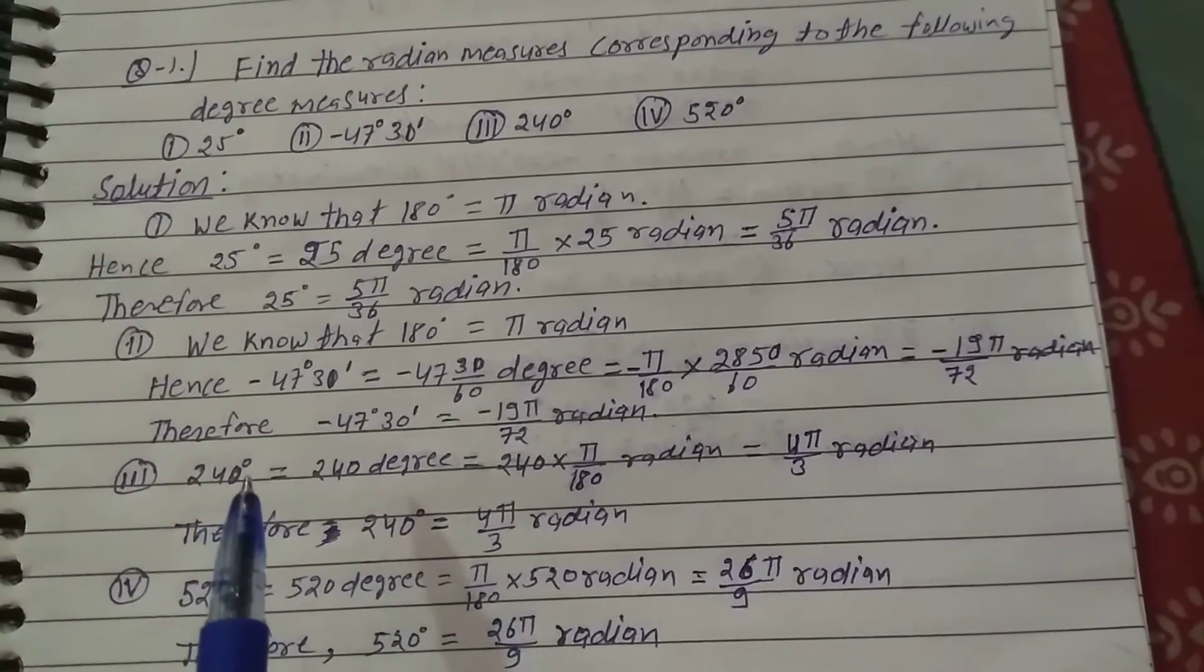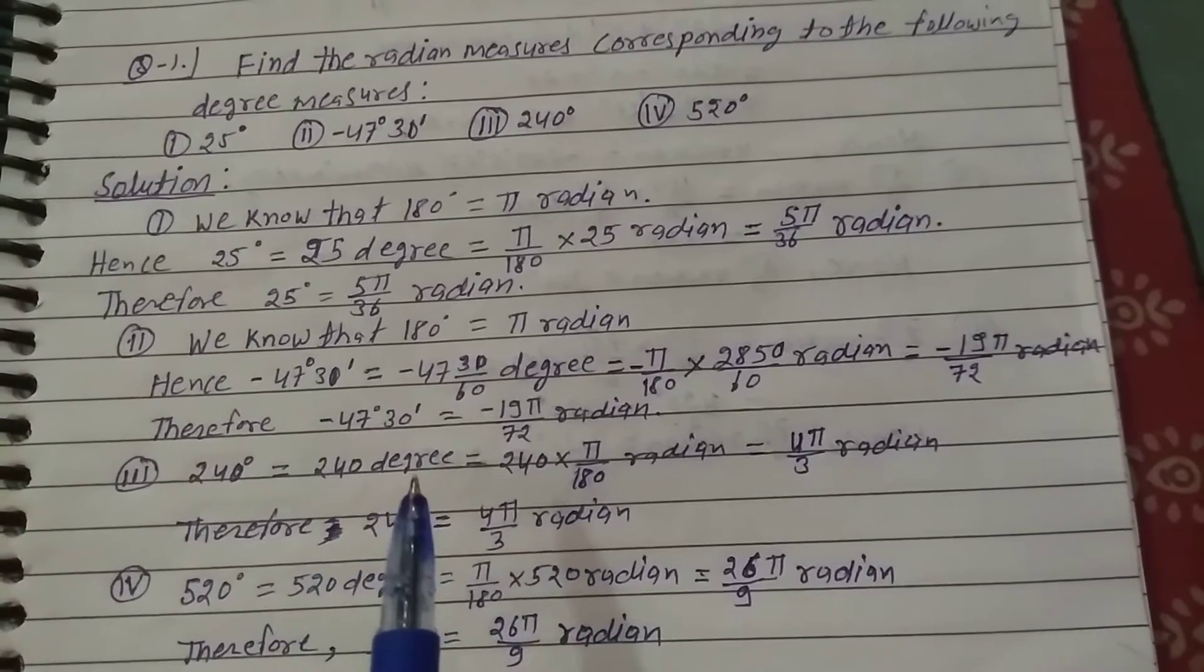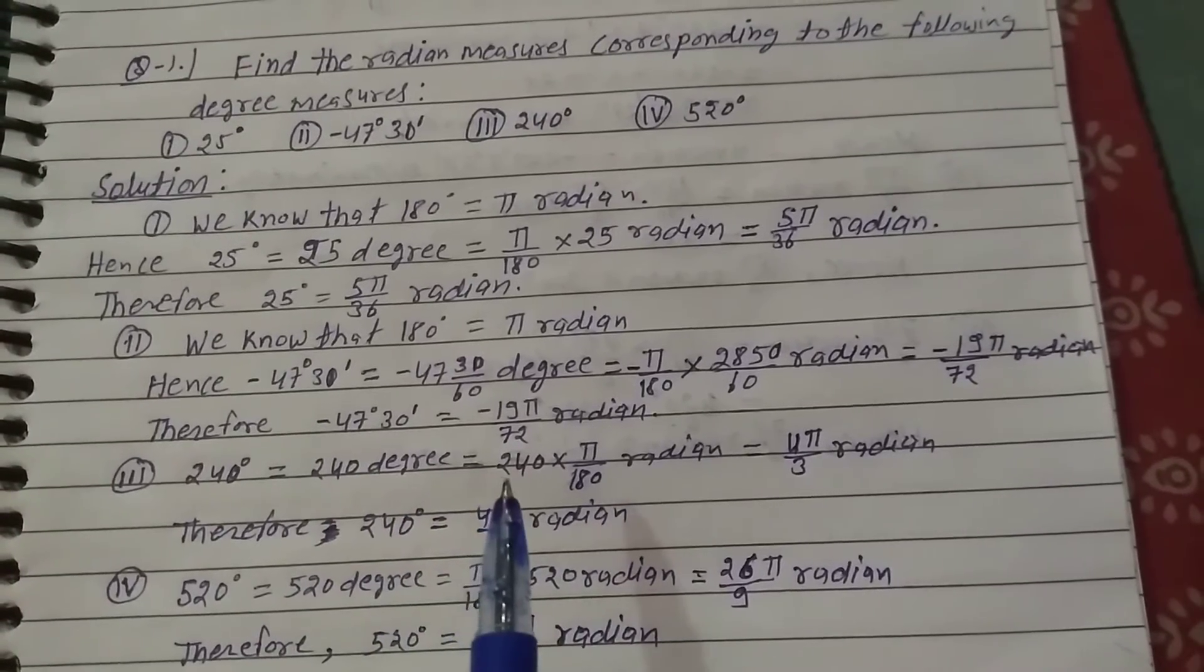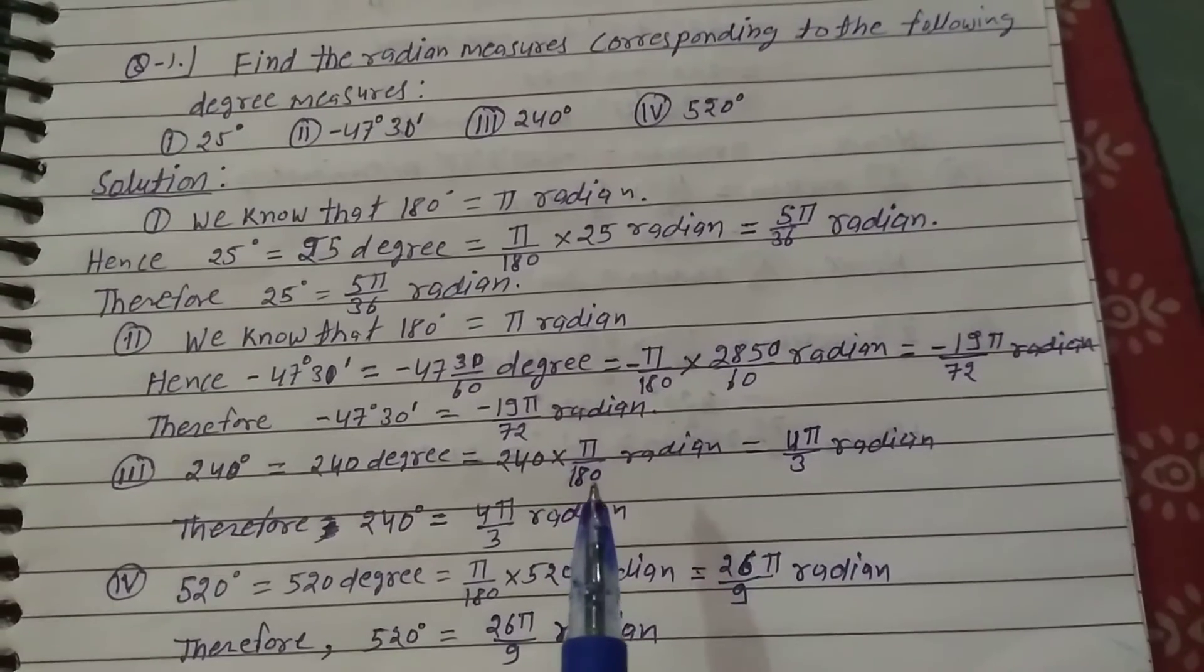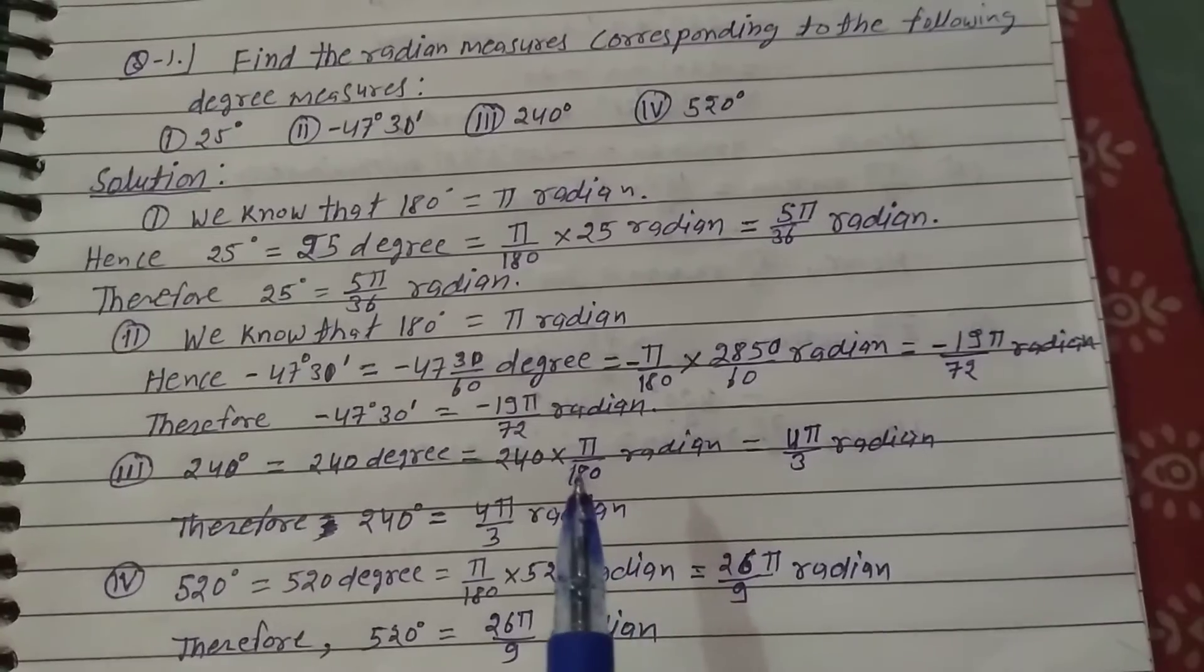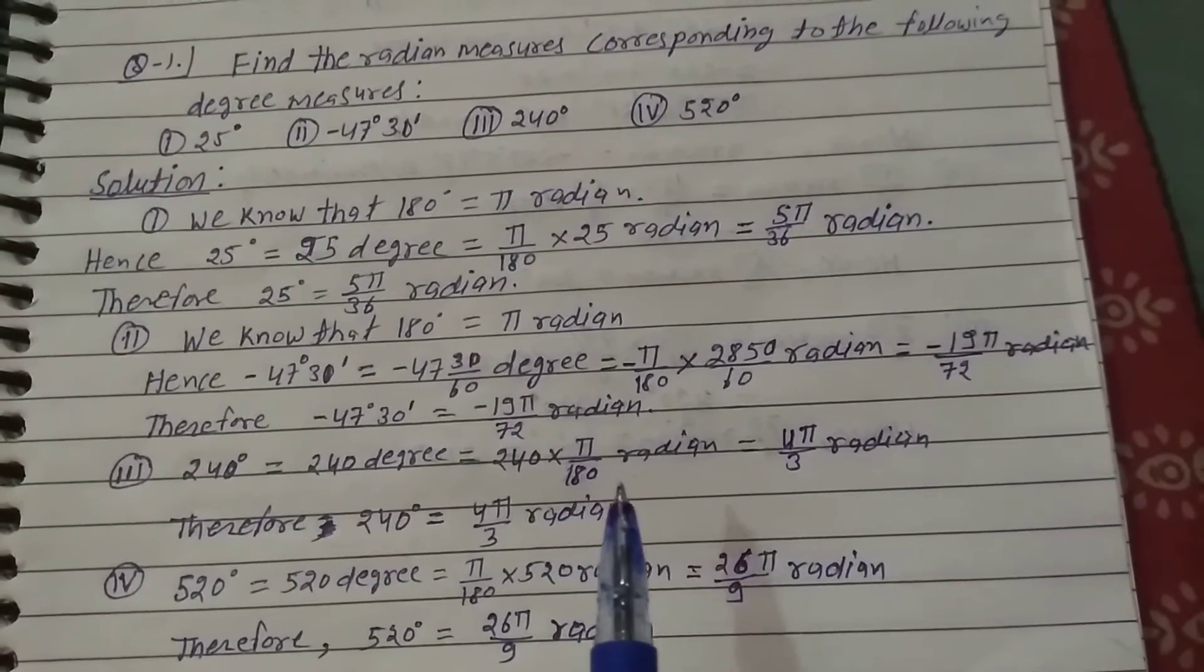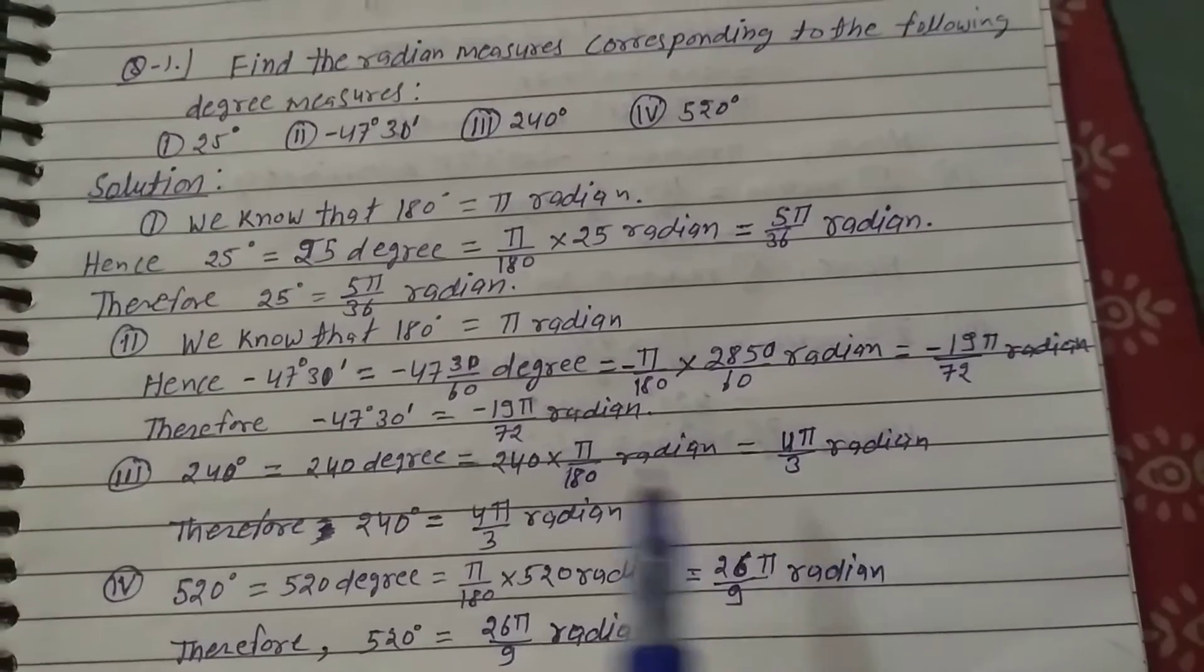Third: 240 degrees. To convert degrees to radians, multiply by π/180. So 240° × π/180 equals 4π/3 radians.